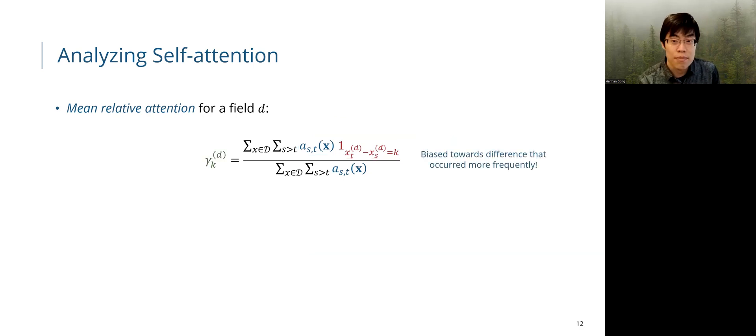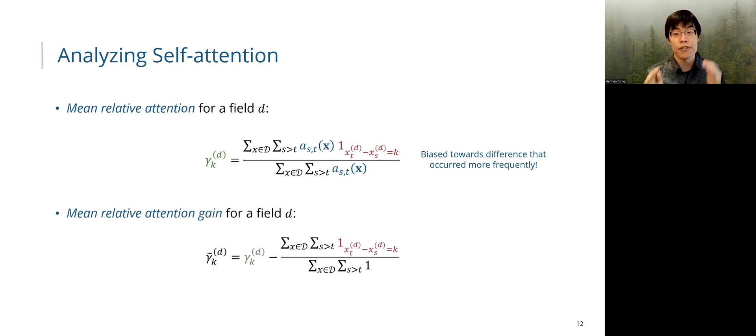However, we notice that this quantity is biased towards difference that occurred more frequently. Hence, we also propose the mean relative attention gain, which is defined as the mean relative attention minus the frequency of a difference k to appear. Intuitively, this quantity measures how much more attention weights are assigned by the model than assuming a uniform attention matrix.